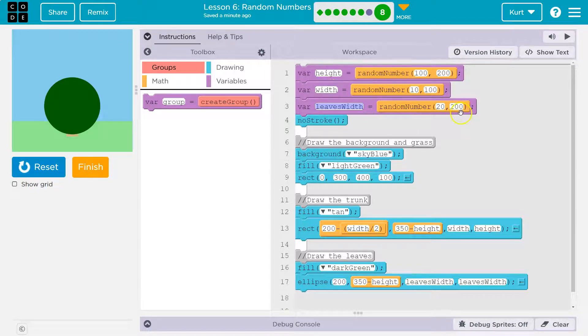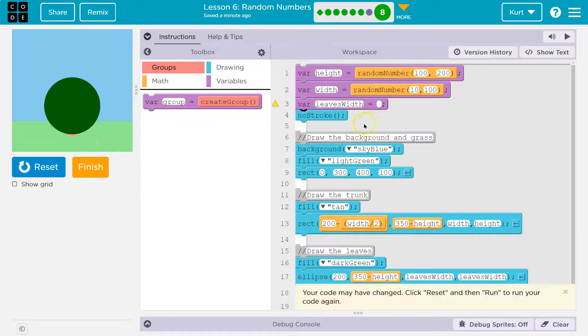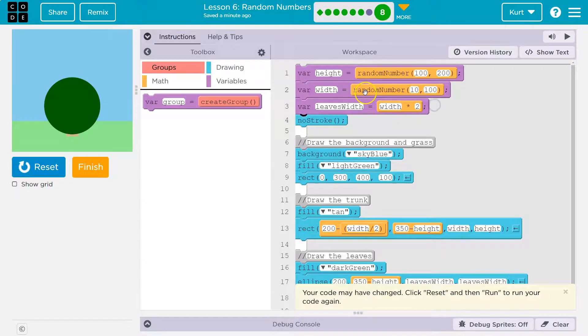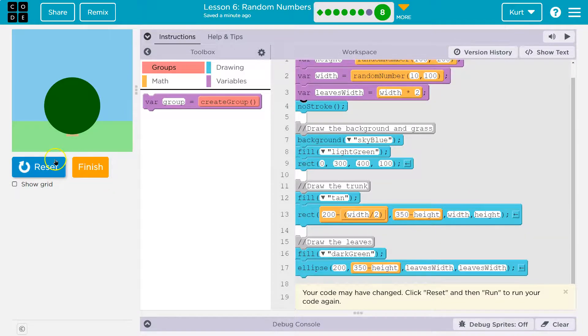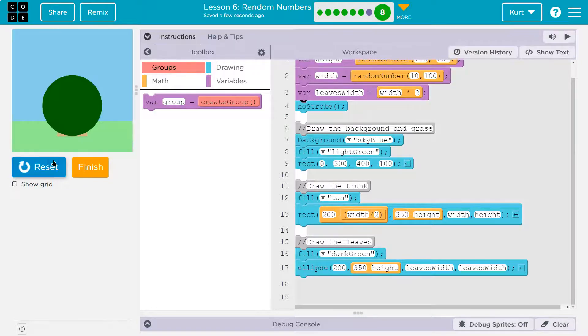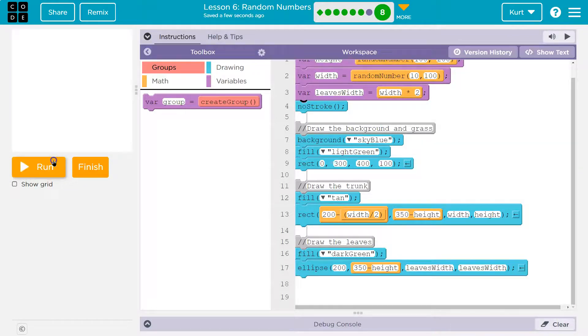Then we need to make sure that leaves width is always double the width. There's a couple ways we could do that. We could do it this way. Right, instead of having it be a random number, we don't want leaves width to be a random number. Now we want it to be exactly something. Exactly what? Well, we want it to be width times two. Now leaves width is equal to width times two, and it will always be exactly double the width of our tree.